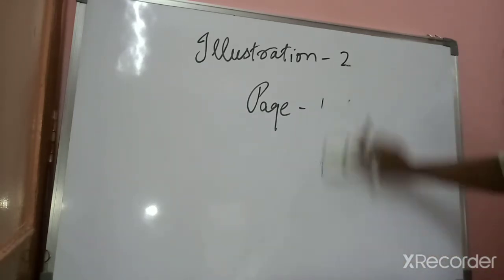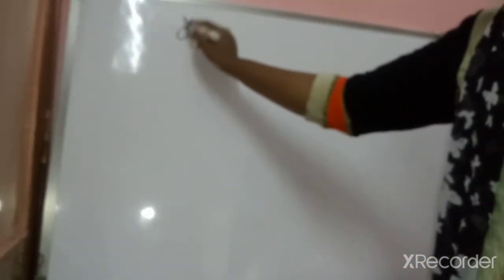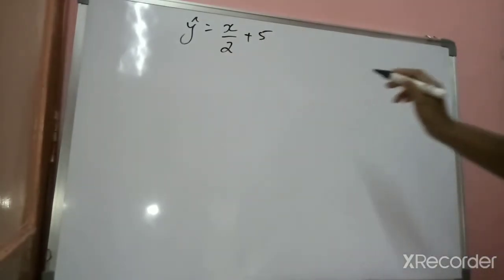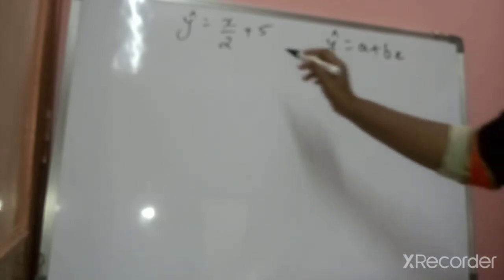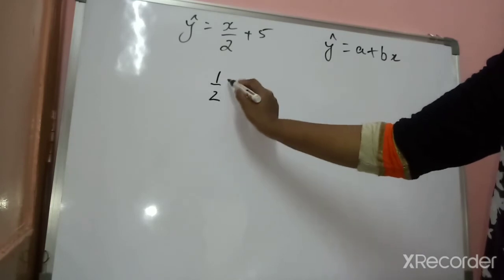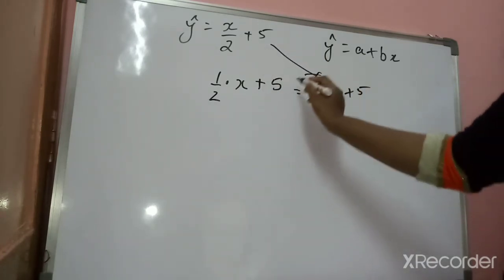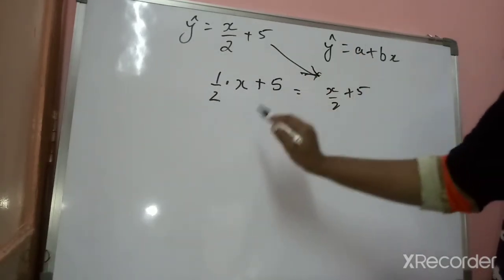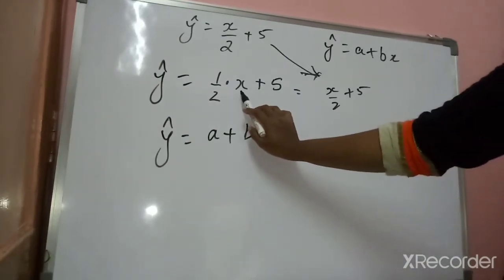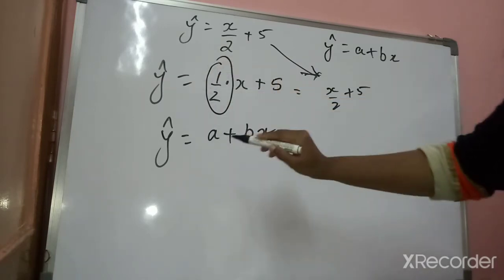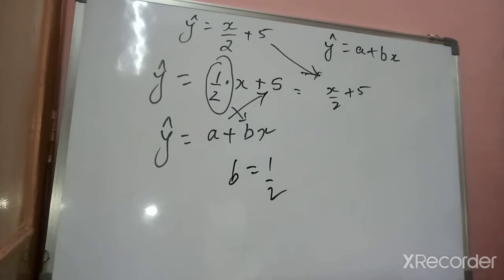Y cap equals X by 2 plus 5. Using the general formula Y cap equals A plus BX, we can write this as 1/2 times X plus 5, so A equals 5 and B equals 1/2. We also have SY upon SX equals 5 by 8. The formula to find B is B equals R times SY upon SX. So B equals 1/2 is known.